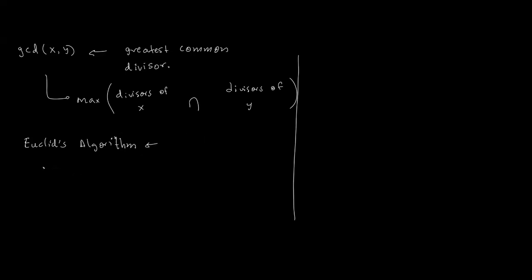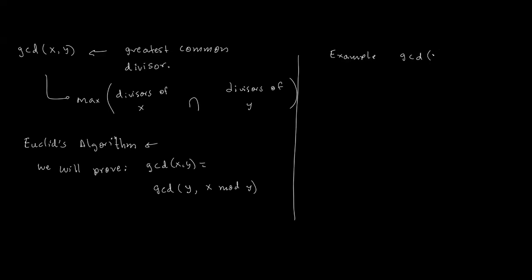This algorithm is based on the following fact: it is possible to compute the greatest common divisor of x and y equal to the greatest common divisor of y and x mod y. Let me give an example. Suppose that I want to compute the GCD of 1,035 and 758.